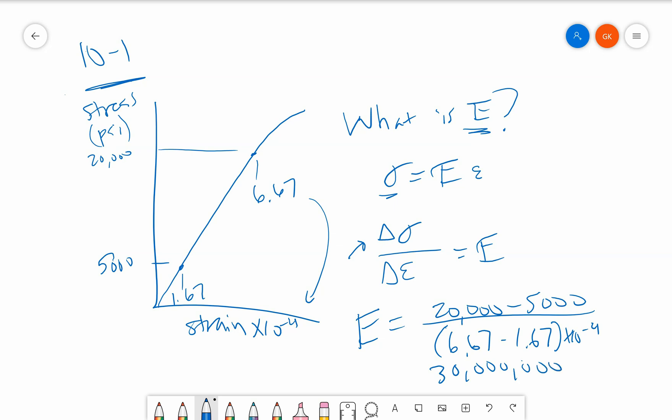30 million PSI. It should be big. Modulus of elasticity are usually big numbers. So that would be our answer, 30 million PSI, and it's all coming from Hooke's Law.